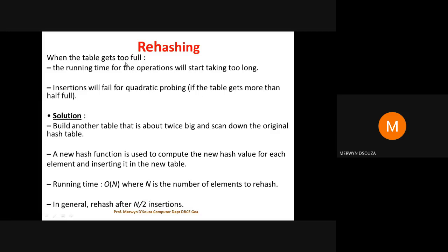There is a question: when the table gets full, what can you do? Quadratic probing, linear probing, and double hashing may all fail. In that case, we may have to build another table that is bigger than the original table, and then use a new hash function to insert data from the old table to the new table. That concept is known as rehashing. Rehashing is normally done when the original hash table gets full: build a second, bigger table and use a new hash function to transfer all the data from the old table.